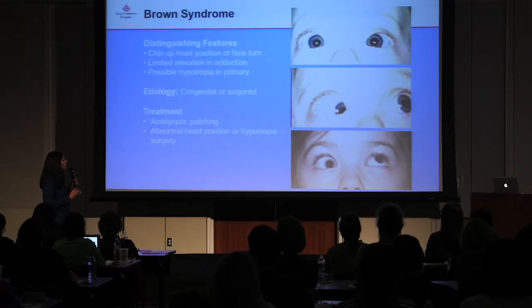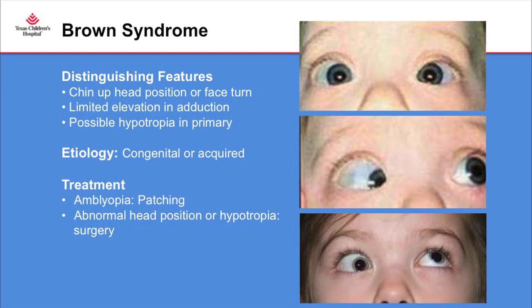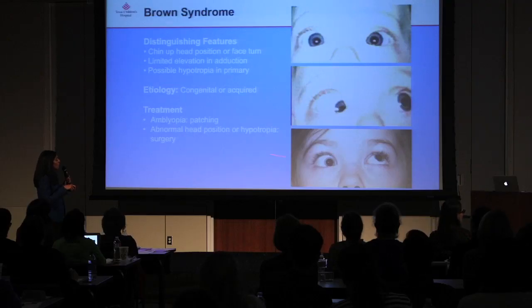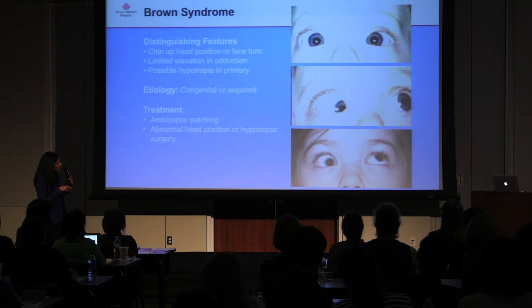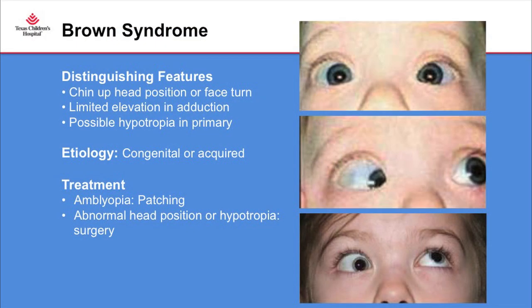Brown syndrome: when you first look at the patient the eyes look pretty aligned, but the clue is that the patient has adapted a chin-up head position. When you have the patient move their eyes, they are unable to elevate the eye in adduction. Brown syndrome presents with chin-up position or face turn, limited elevation in adduction, and when you put the patient in primary erect head position you'll often see a hypotropia. If amblyopia is present, patching is indicated. If there's an abnormal head position or significant hypotropia, we recommend surgery.